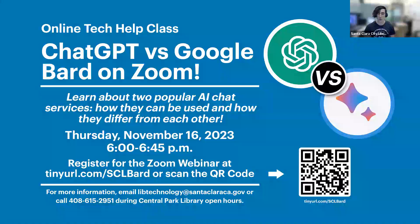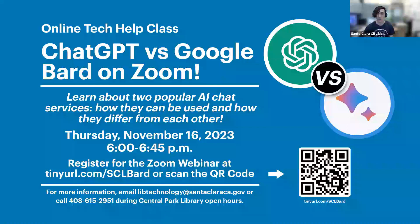If you have any questions along the way, you can use the Q&A feature at the bottom of your screen to type out your question. Once we get to the end, we'll go through your questions and answer them. If we do run out of time, you can come to the Technology Center in the Central Park Library and there's going to be someone there anytime we're open who can give you one-on-one help. So with that said, we can get right into the class.